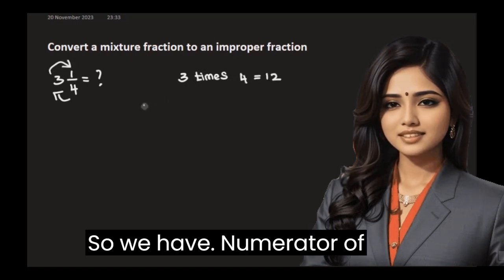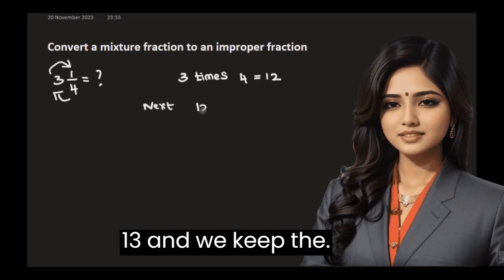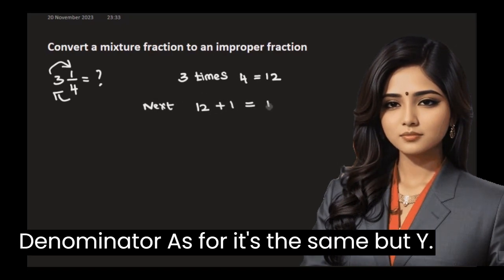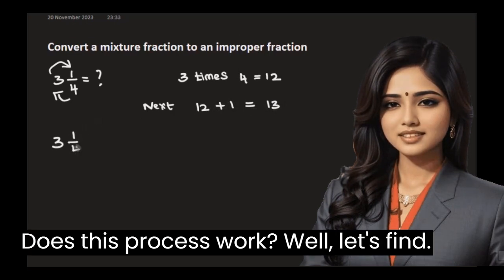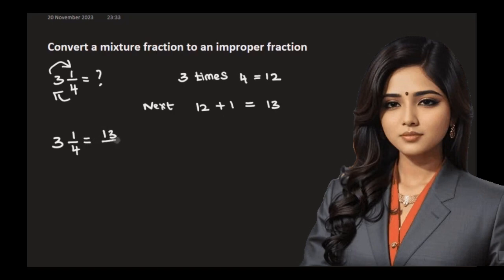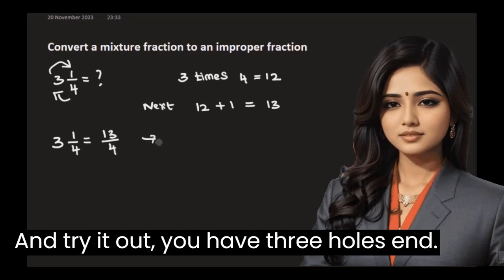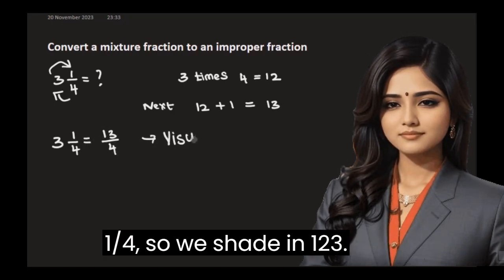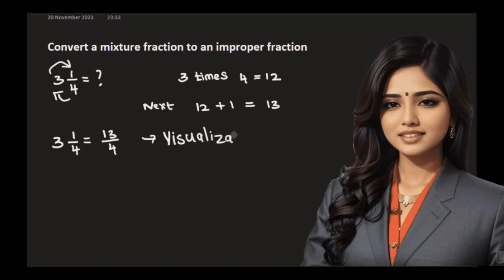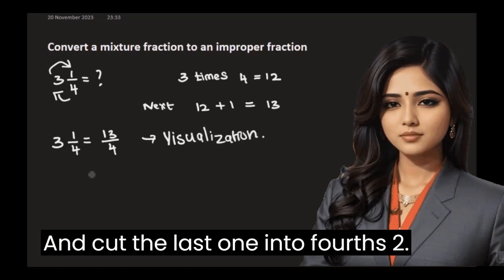So we have a numerator of 13 and we keep the denominator as 4, it's the same. But why does this process work? Well, let's find out and try it. You have 3 wholes and 1/4th, so we shade in 1, 2, 3 and cut the last one into fourths to shade in 1.